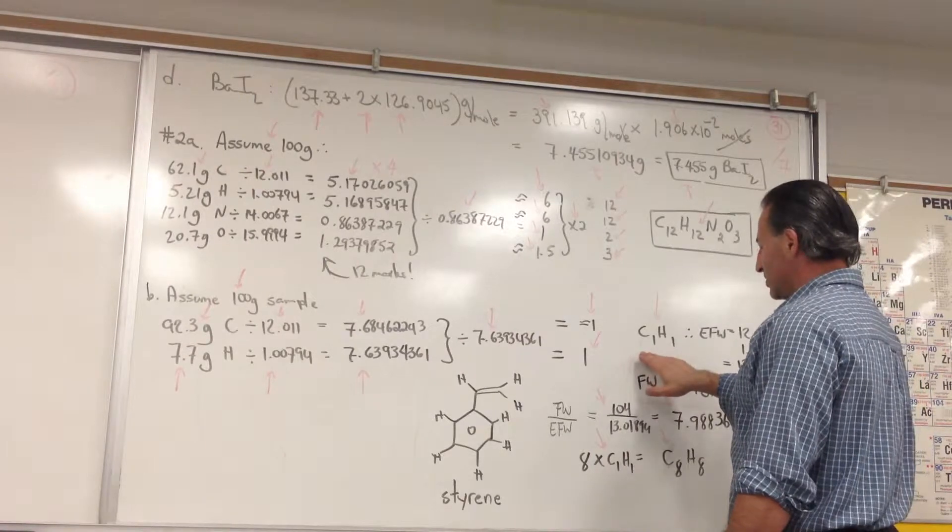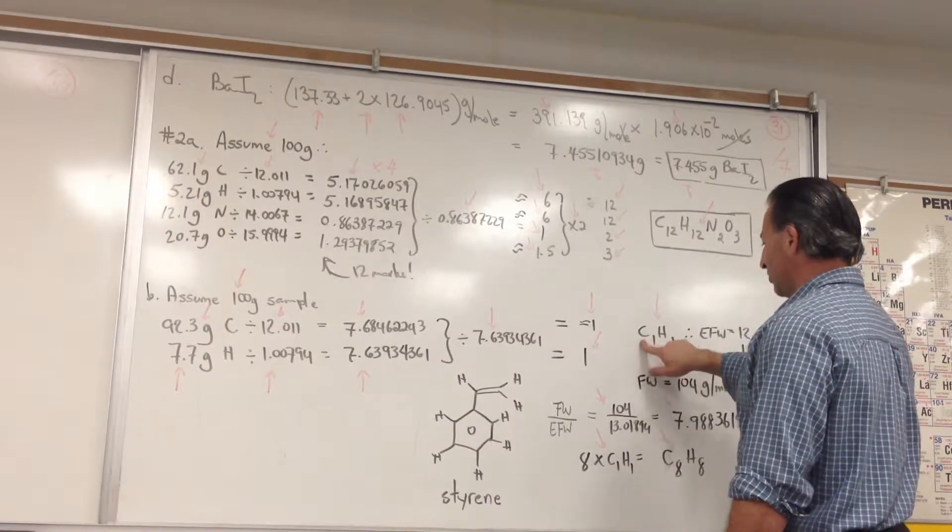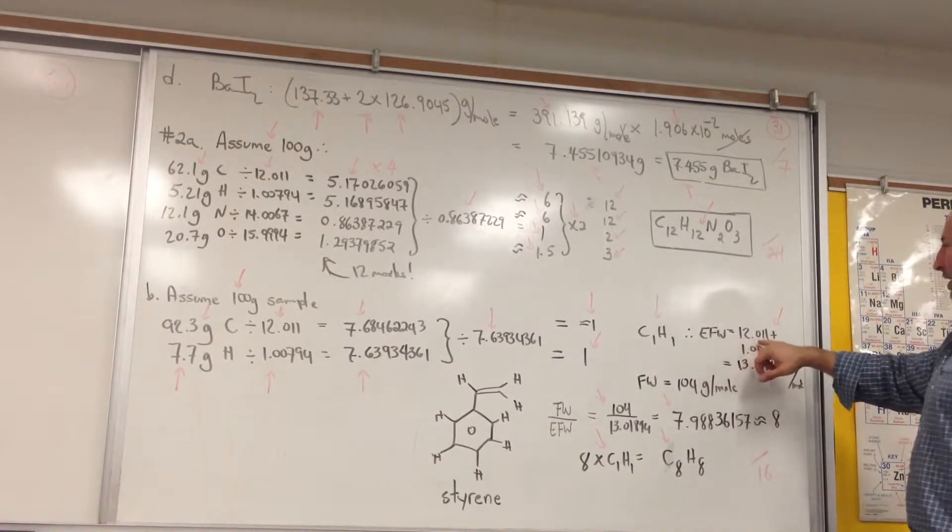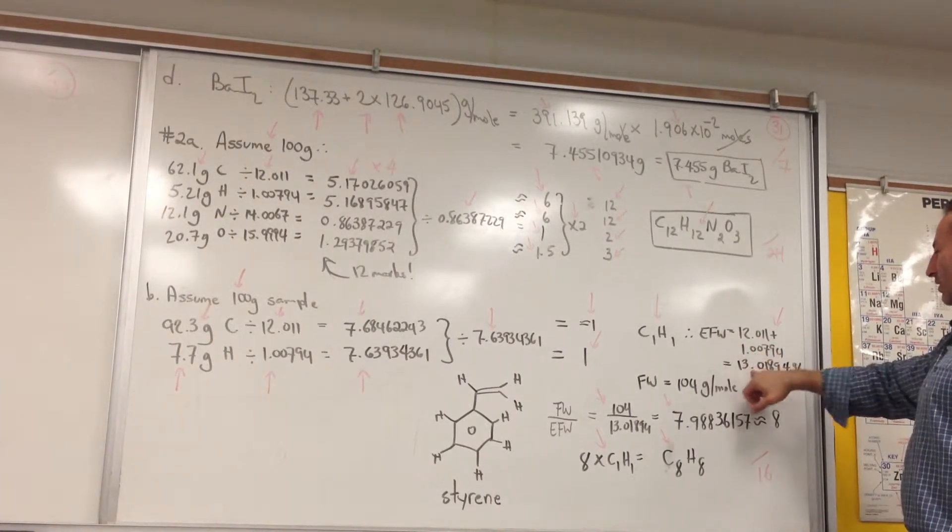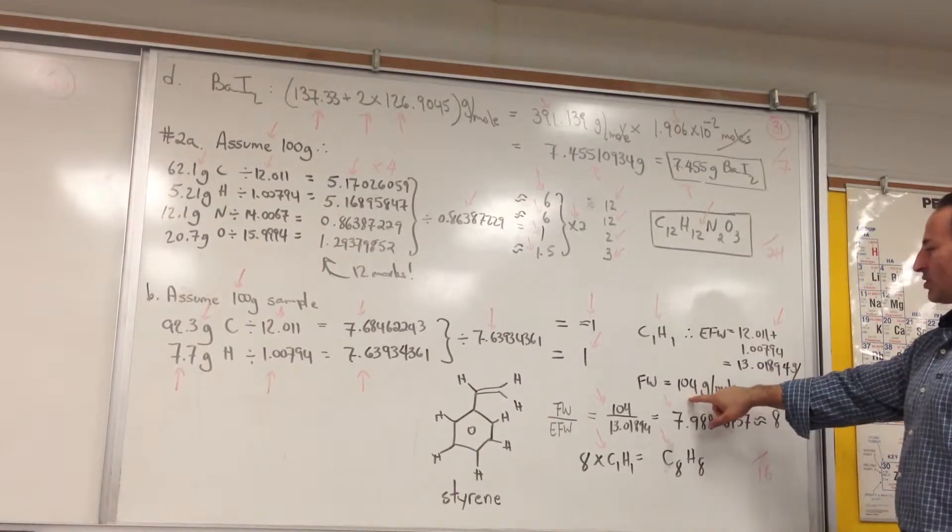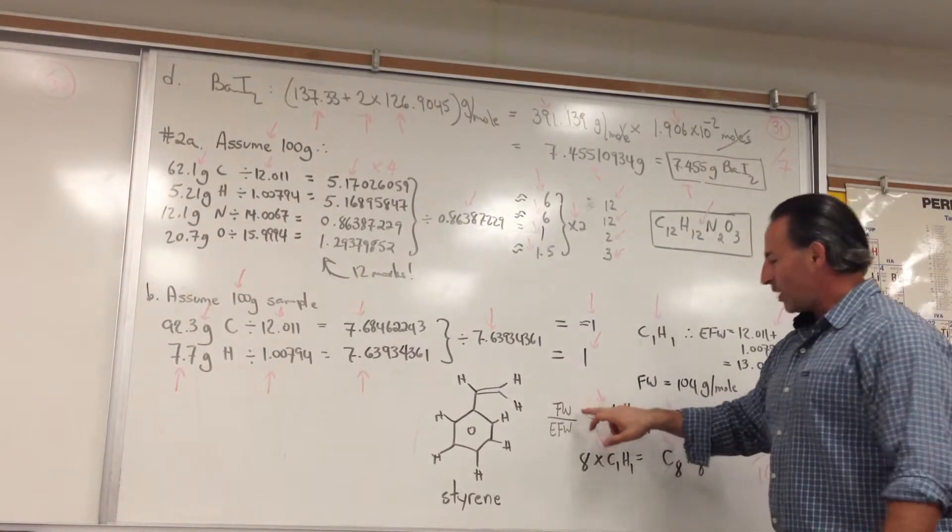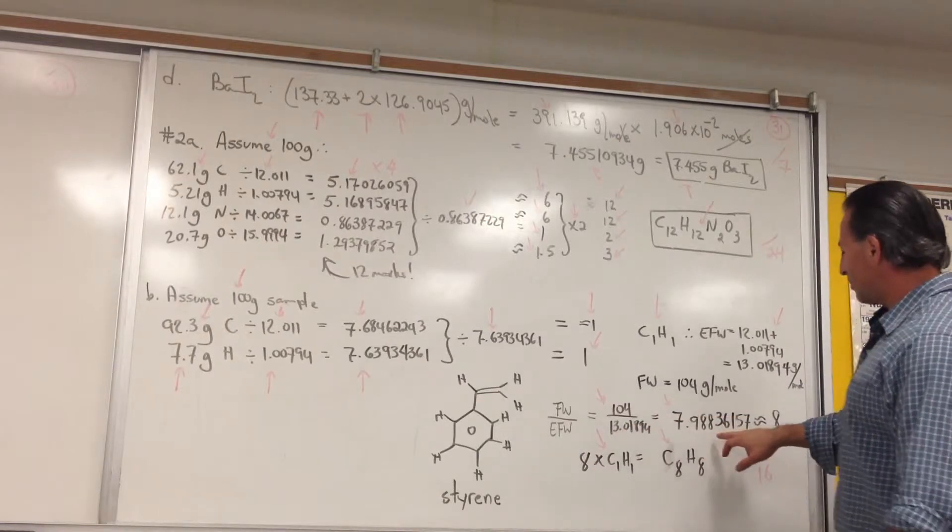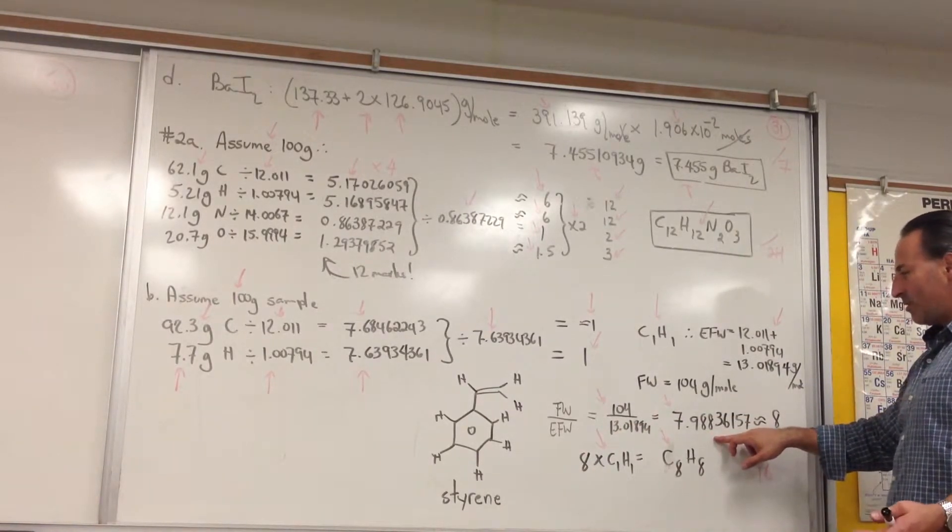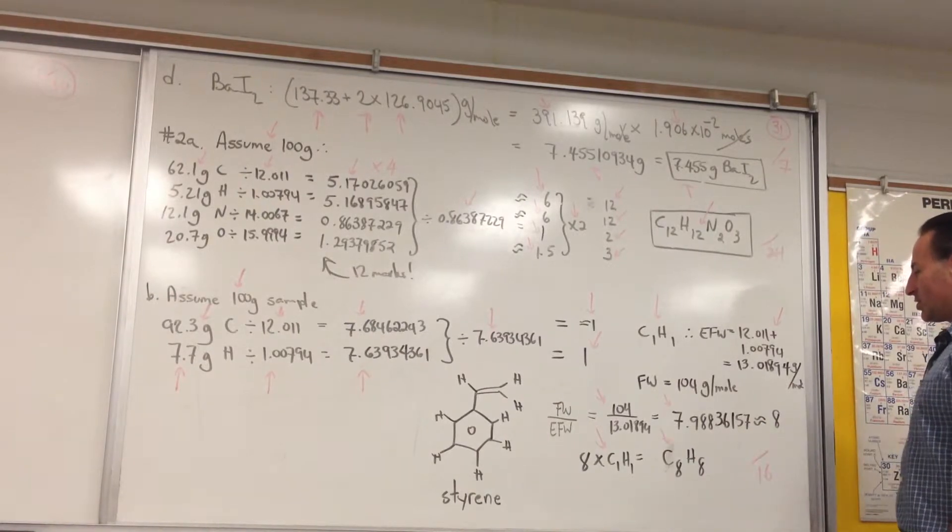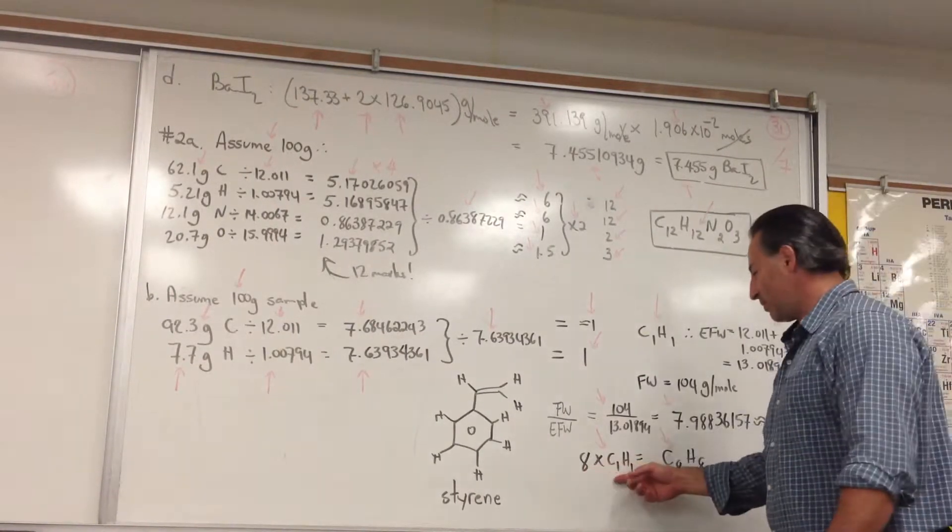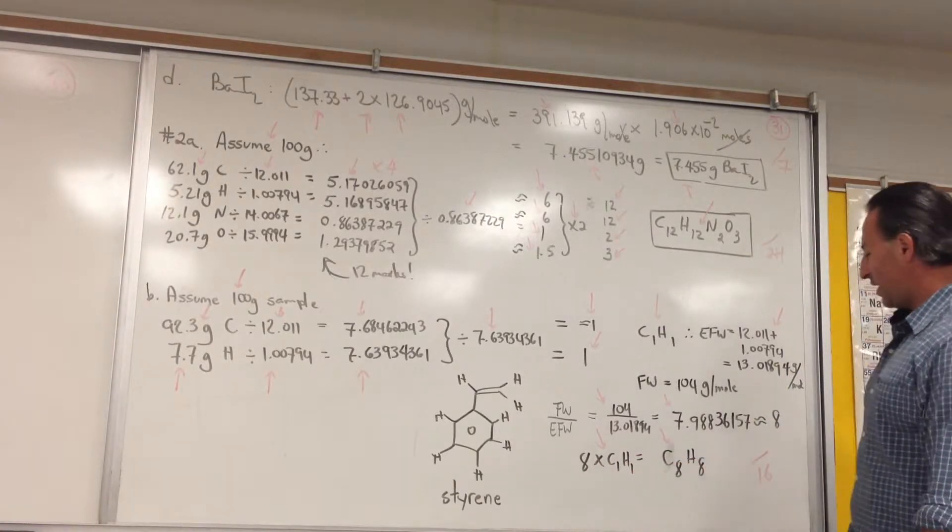So, we realize that the empirical formula is C1H1. When we calculate the empirical formula weight, we get that 12 plus 1 gives you 13. But the molar mass, we're told, is 104. So, when you divide the formula weight by the empirical formula weight, you get a number very close to 8, which, within experimental error, should indicate to us that it is, in fact, 8. So, 8 times the empirical formula will give you C8H8.